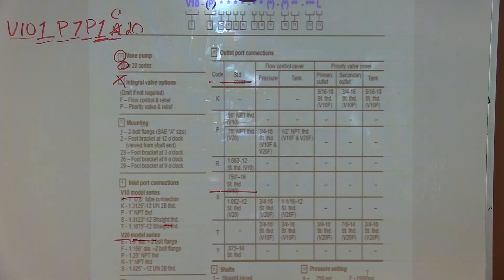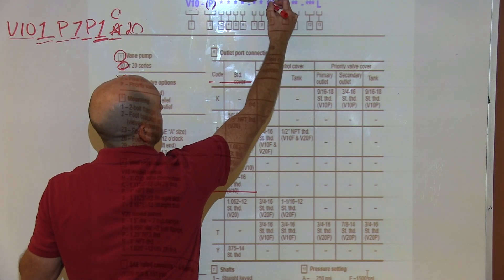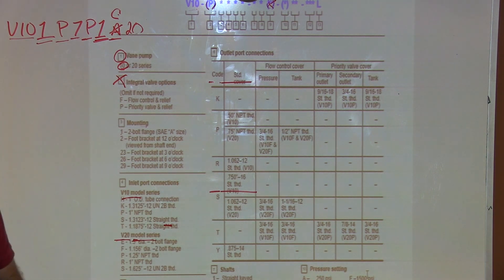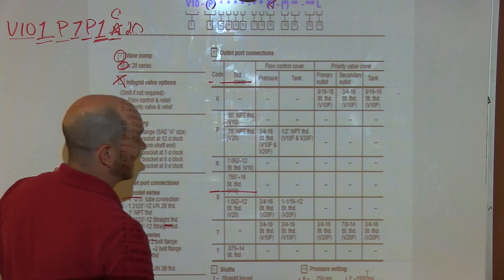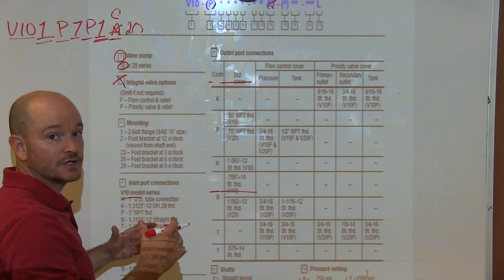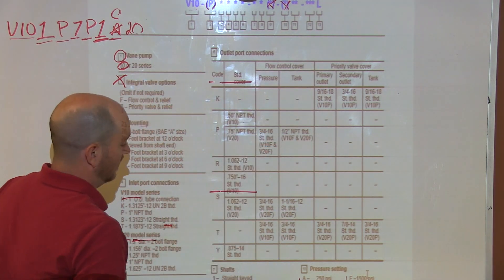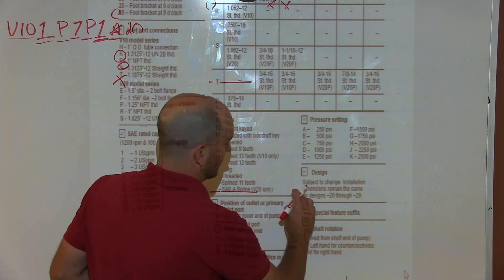So I look at nine and you can see this is in parentheses, none of those, so this one is going to be omitted. Then I go and I look at 10 and I get a bunch of letters here for different pressure settings. Well, we know that there is not a pressure relief valve built into this pump, so this is omitted.